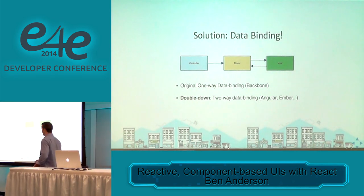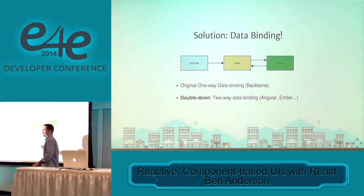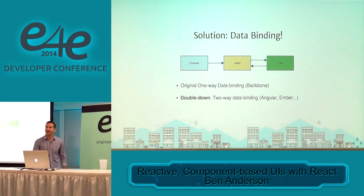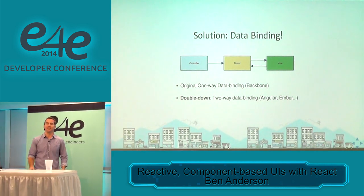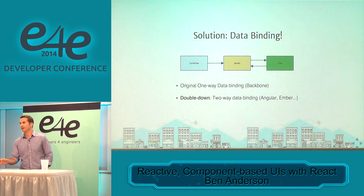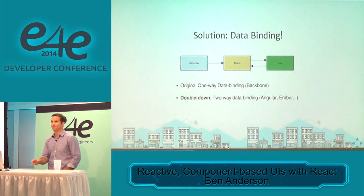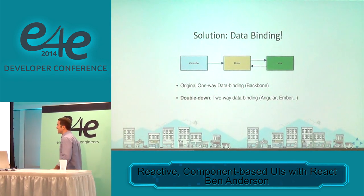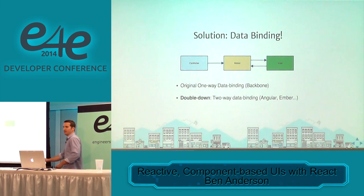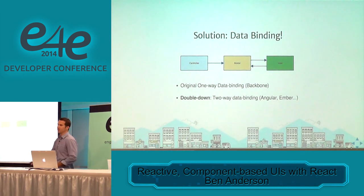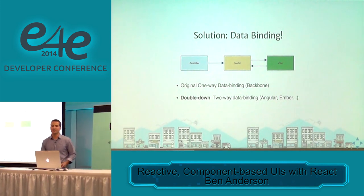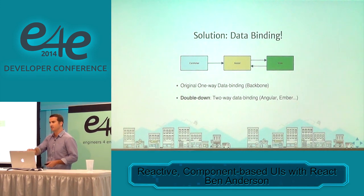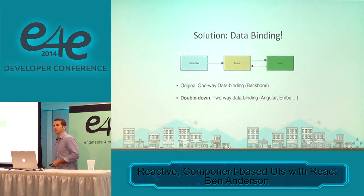We've already got a solution for reactivity in the DOM — everyone remembers the first Backbone or Knockout application they wrote and how magical it felt when the DOM would update just by updating your models. It was truly groundbreaking. But then we started pushing the envelope more, made our applications more stateful, and started running into problems — mostly around touching the DOM too much.